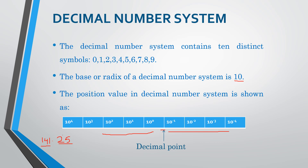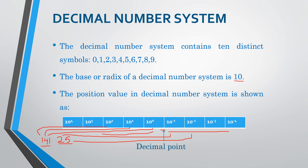Now 2 ki position value will be 10 raised to power minus 1. 5 ki position value will be 10 raised to power minus 2. Likewise, 1 ki position value will be 10 raised to power 0. 4 ki position value will be 10 raised to power 1. 1 ki position value will be 10 raised to power 2.